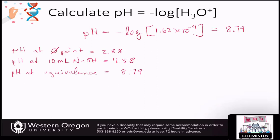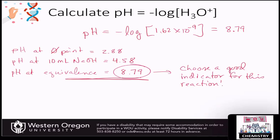Knowing the pH at the equivalency point — 8.79 — you can choose a good indicator, one that changes color very close to that pH. You could continue calculating pH values if you kept adding sodium hydroxide past the equivalency point, though that requires adjusting the equation. Next time we'll talk more about graphing the titration data for a weak acid titrated with a strong base, including derivative graphs that make it very easy to identify the equivalence point precisely.